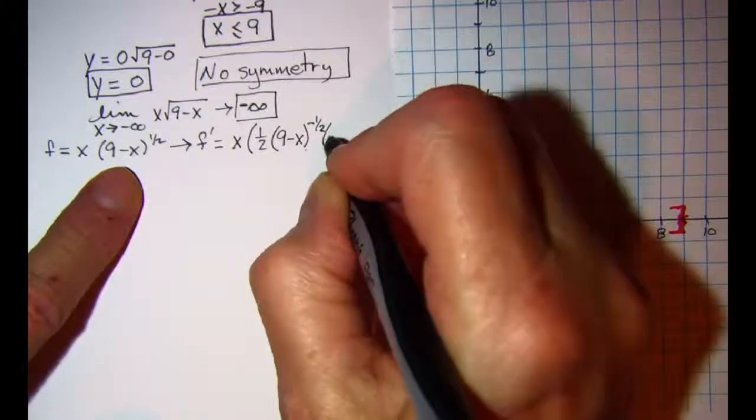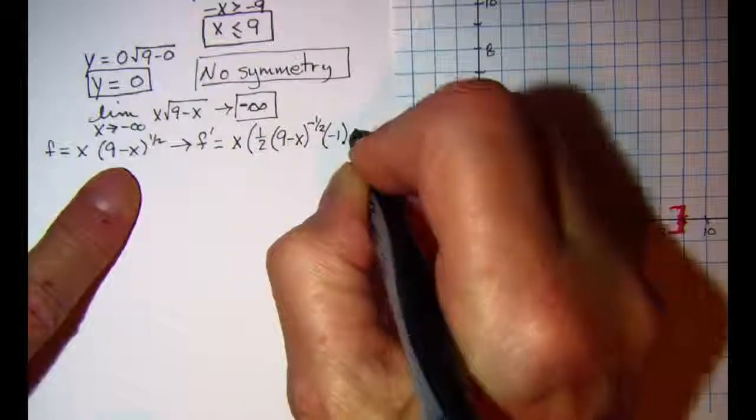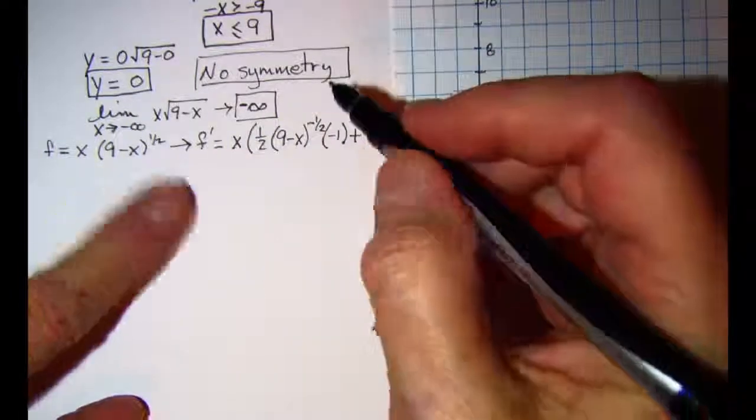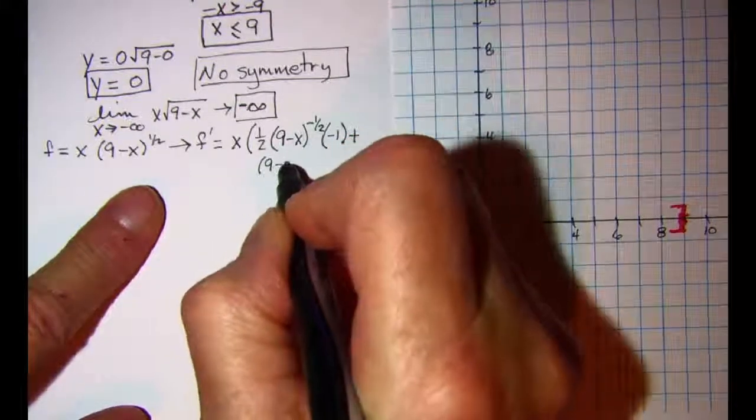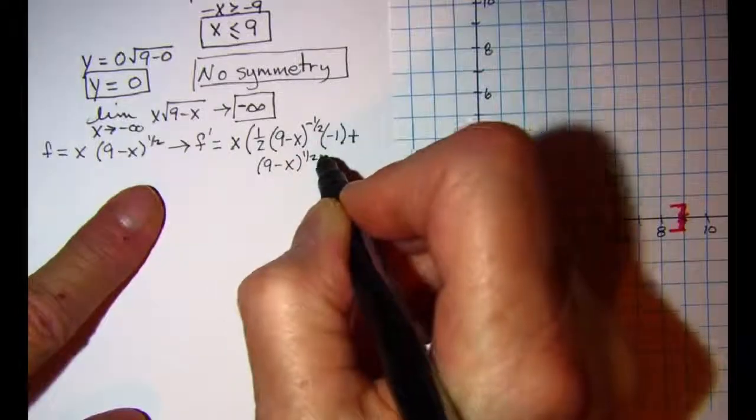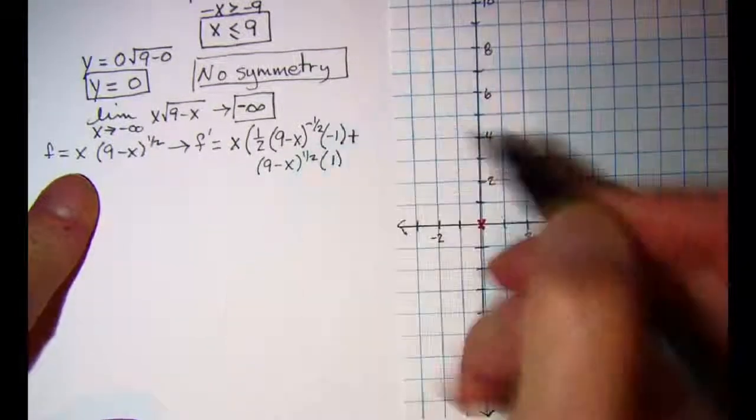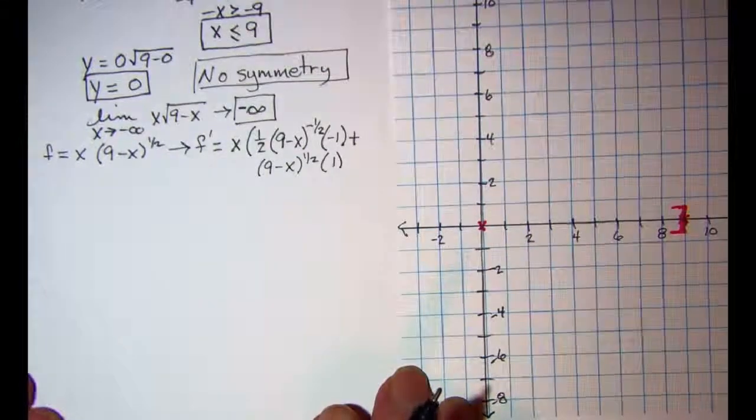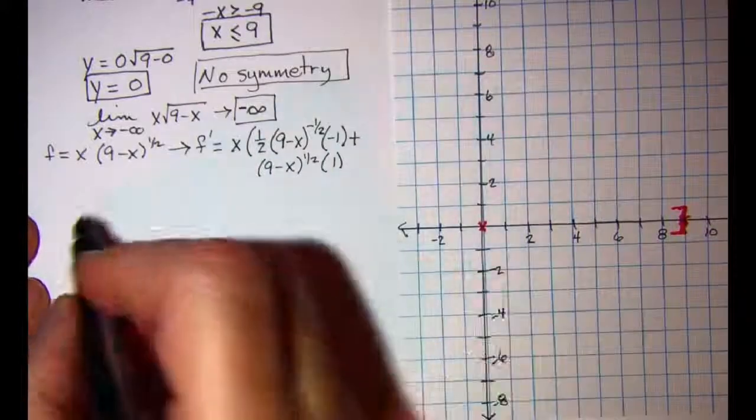x times the derivative of what's inside plus the second factor, times the derivative of the first.